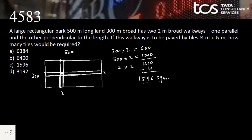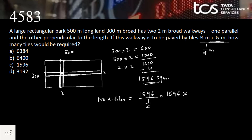The walkway area is 1596 square meters. Each tile is ½ m × ½ m = ¼ square meter. Number of tiles required = 1596 ÷ (1/4) = 1596 × 4 = 6384 tiles. Option A is the answer.